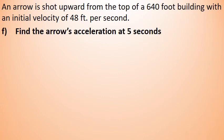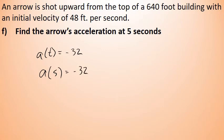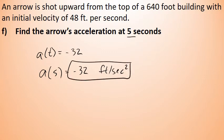When we found the acceleration function in Part C, it turned out to be a constant, as is the case for any freely falling object not under any force other than gravity. The acceleration function a(t) equals negative 32. This means that for the entire time the arrow is traveling through the air, its acceleration is negative 32 feet per second squared — including at five seconds. The arrow's acceleration at five seconds is negative 32 feet per second squared.